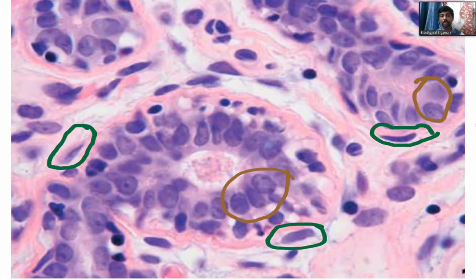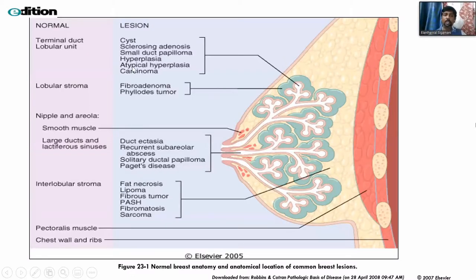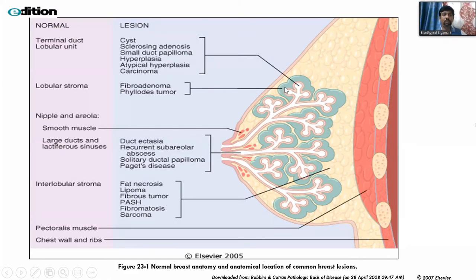There is only one benign condition that will not have myoepithelial cells — that is microglandular adenosis. This diagram shows different disease entities and which part of the breast they arise from. Mainly from the terminal duct lobular unit you can see cysts, sclerosing adenosis, and small duct papilloma. From the lobular stroma you get fibroadenomas and phyllodes tumor. Smooth muscle tumors arising from smooth muscle are very rare entities.